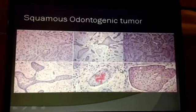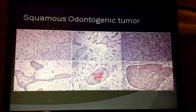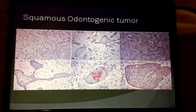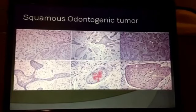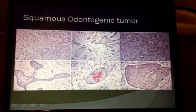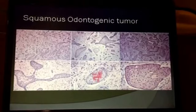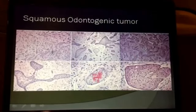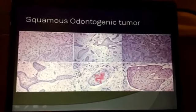The squamous odontogenic tumor is a similar lesion, fairly easy to recognize with a comparable radiographic and clinical appearance — presenting in adulthood as a cystic or lucent lesion with a somewhat sclerotic border. But in this case, rather than having a typical ameloblastic type of epithelium, you'll see definite squamous differentiation. The central pallor and peripheral palisading expected in ameloblastoma are missing in this tumor.